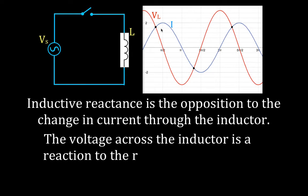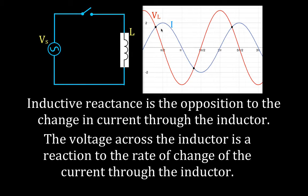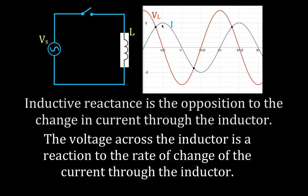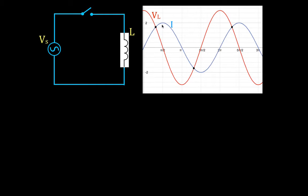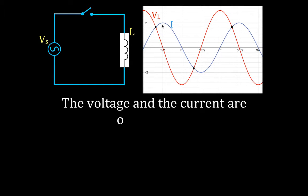The voltage across the inductor is a reaction to the rate of change of the current. The current is changing over time, and that results in a time-changing voltage also. You'll notice that the peak voltage and the peak current do not occur at the same time — the voltage waveform and the current waveform are out of phase with each other. For pure inductive circuits, the voltage and the current are out of phase.